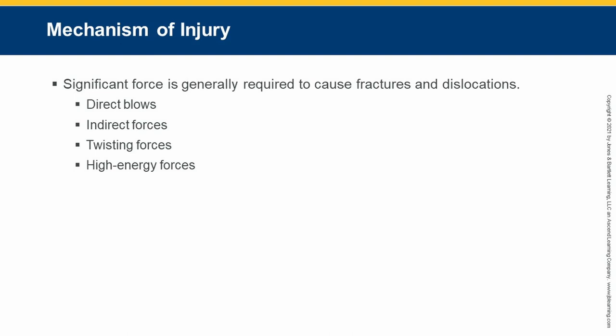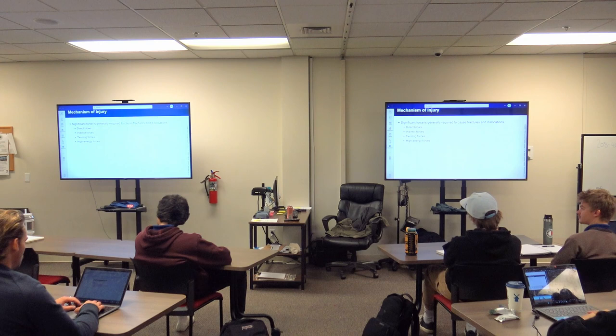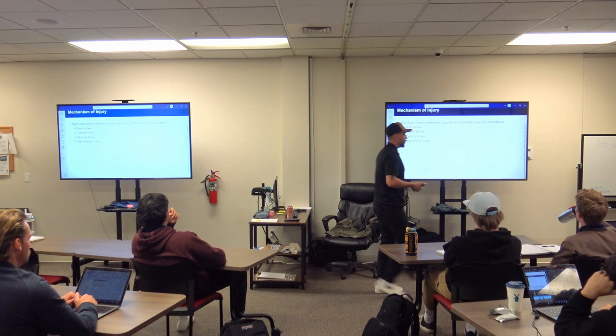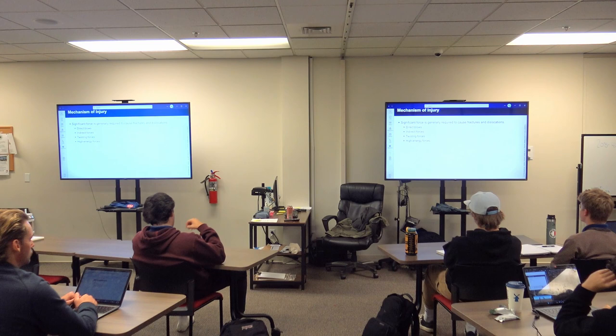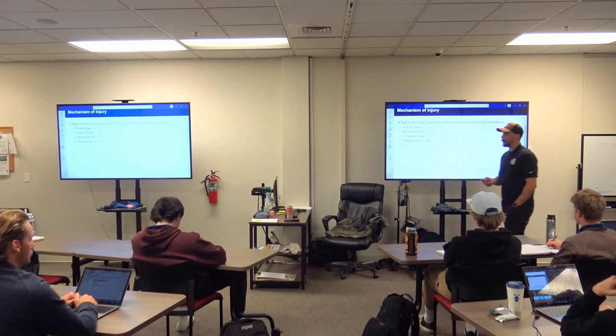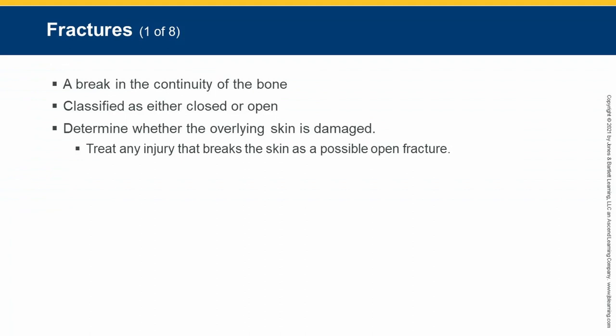When we talk about mechanism of injury, we have to pay attention because if the mechanism is great enough, not only are bones and muscles impacted but also organs. The four main types are: direct blows, indirect blows, twisting forces, and high-energy trauma. The type of mechanism will dictate the type of fracture that results.